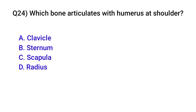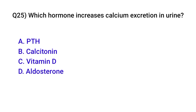Question number twenty-four: Which bone articulates with the humeral head at the shoulder? Correct option is C: Scapula. Question number twenty-five: Which hormone increases calcium excretion in urine? Correct option is B: Calcitonin.